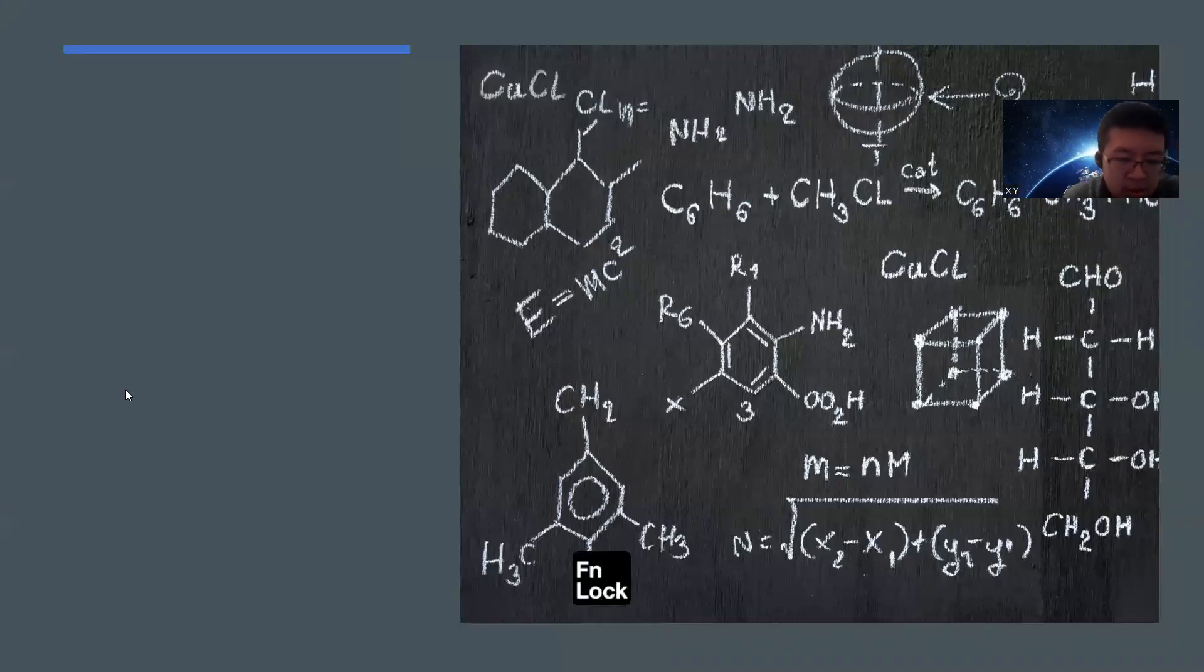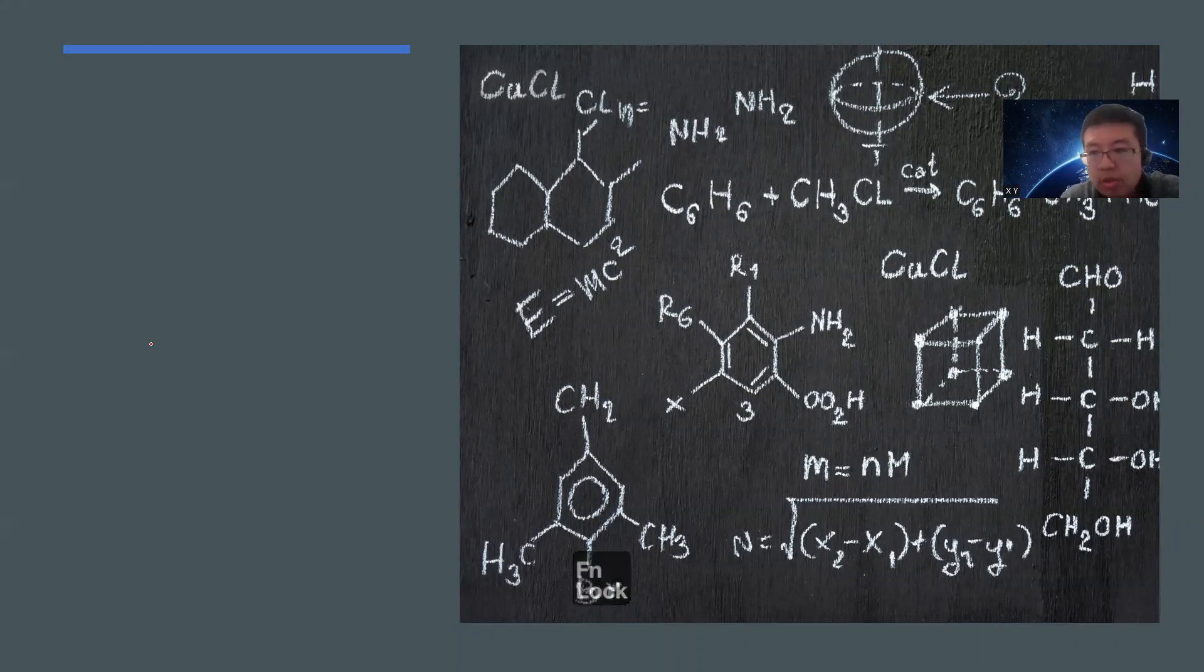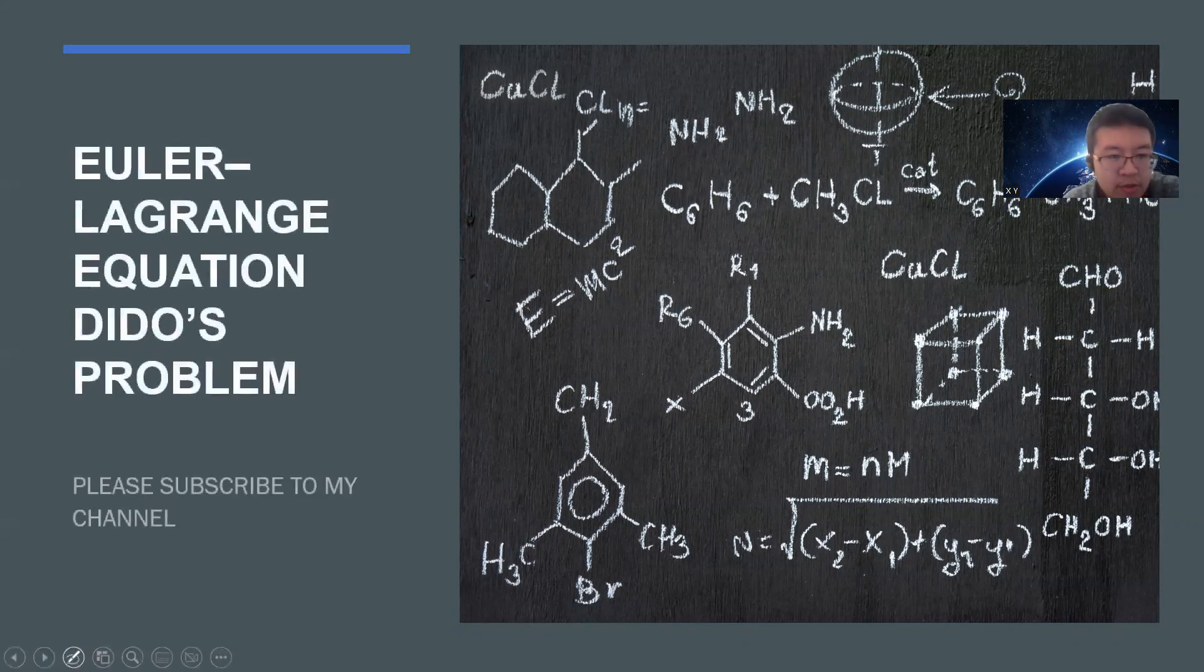Hey, what's the podcast? Welcome to my YouTube channel. So in this video, let's talk about a die-dose problem. Basically, it's a famous isometry problem in the variational principle, and the proof is very simple. So we can just directly use the Lagrangian in one dimension and directly solve it. Okay, so this problem is also called isometry problem.